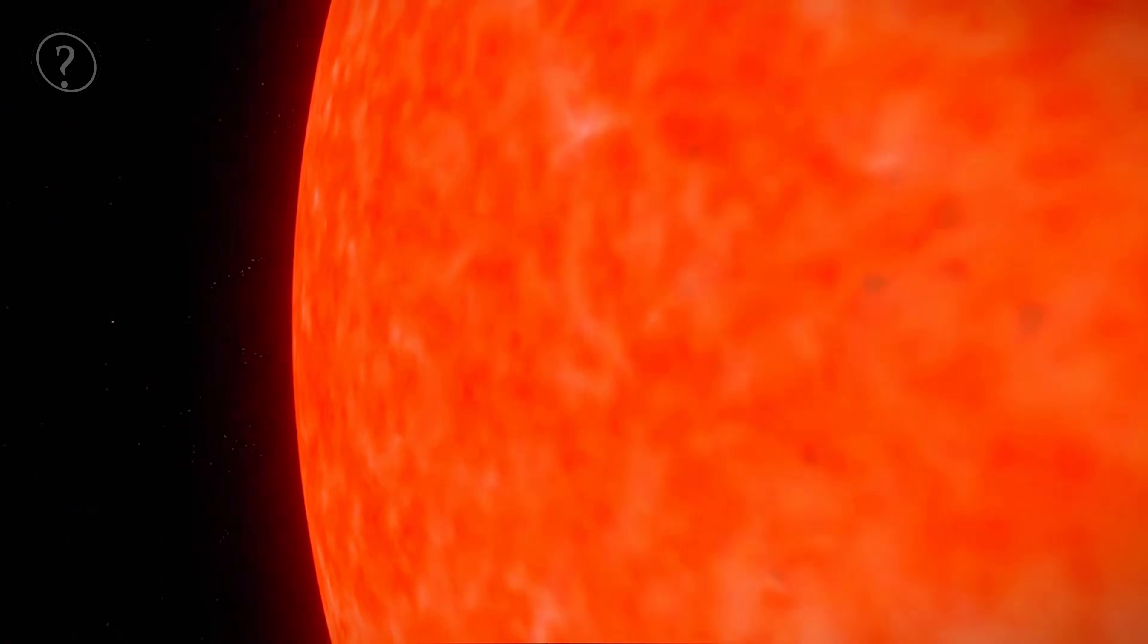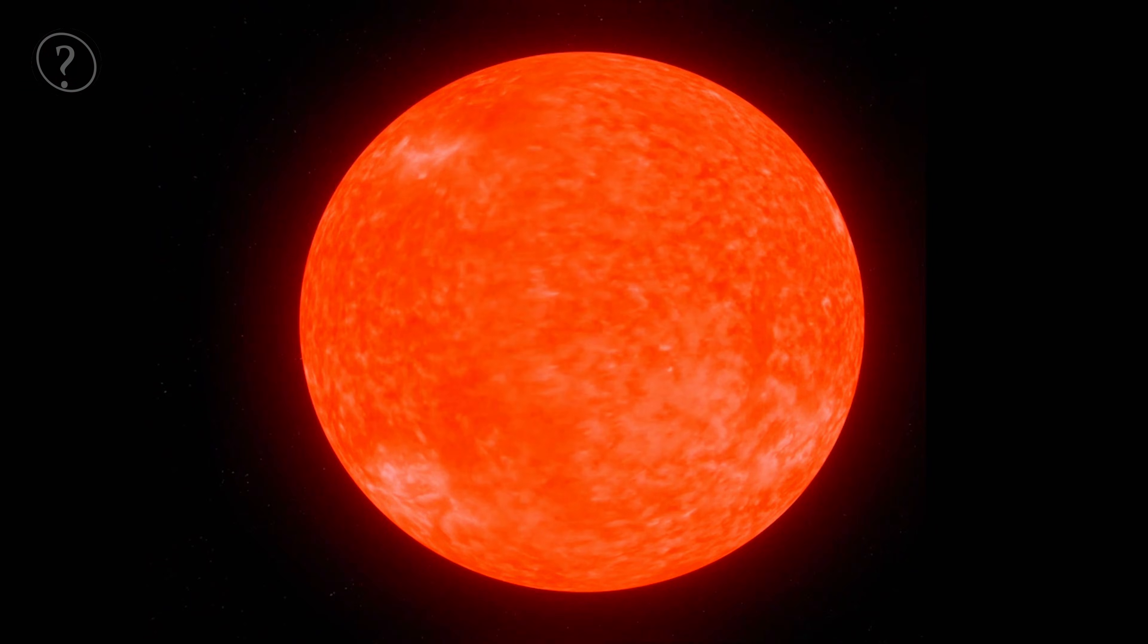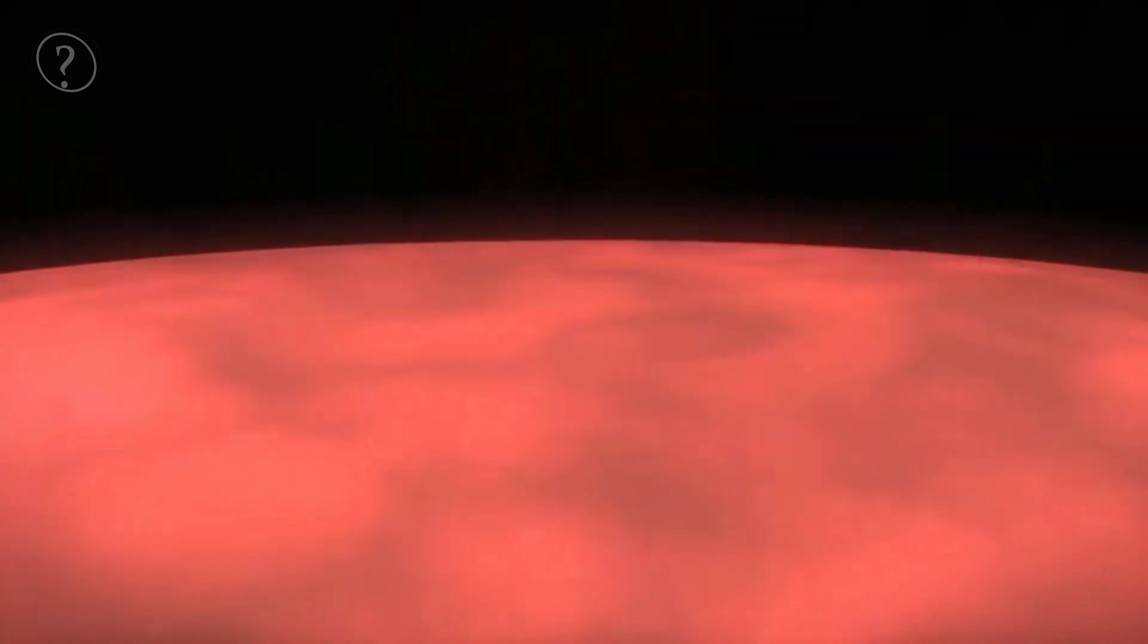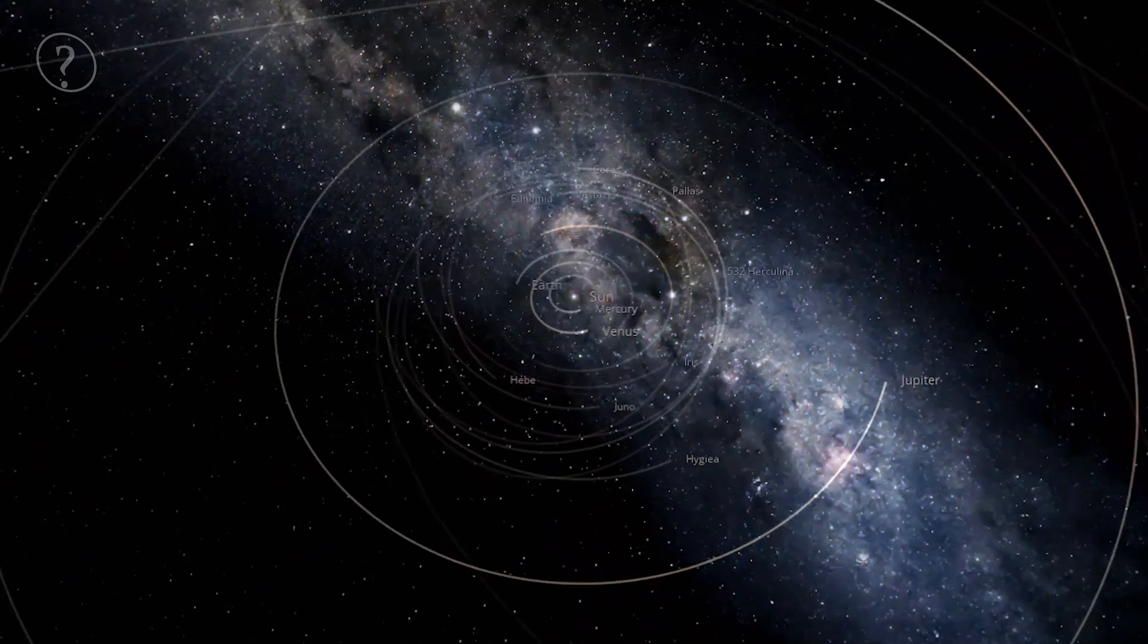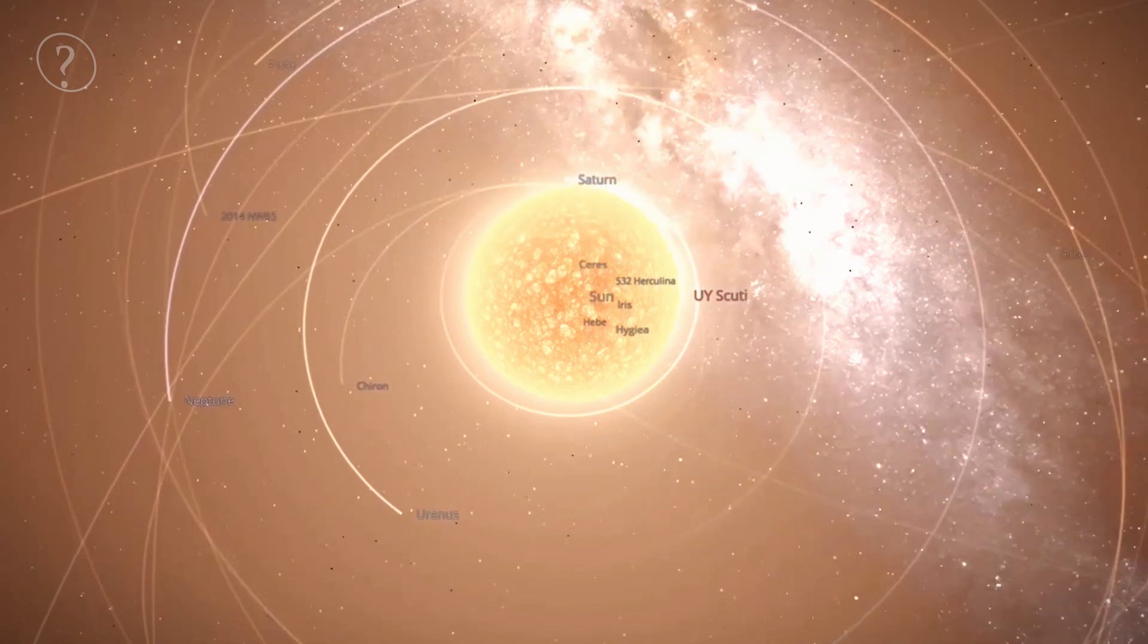Stars like UY Scuti are born in massive clouds of gas and dust, undergo nuclear fusion to generate energy, and eventually meet their end through dramatic cosmic events like supernova explosions. These processes create elements like oxygen, carbon, and even gold that are essential for life on Earth. It's fascinating to think that the atoms in our bodies, the food we eat, and the very air we breathe were once forged in the hearts of stars that lived and died billions of years ago. In a way, we're all connected to these cosmic giants, a beautiful reminder that we're made of star stuff.